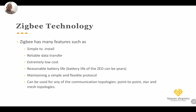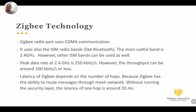Zigbee has many features: simple to install, reliable data transfer, extremely low cost, reasonable battery life, and a simple and flexible protocol. It supports point-to-point, star, and mesh topologies. For modulation, Zigbee uses CDMA and operates in the ISM radio bands like Bluetooth — primarily 2.4 GHz, but also 900 MHz in the USA and around 800 MHz in Europe. The data rate at 2.4 GHz is 250 kbps with an actual throughput of 100 kbps or less.